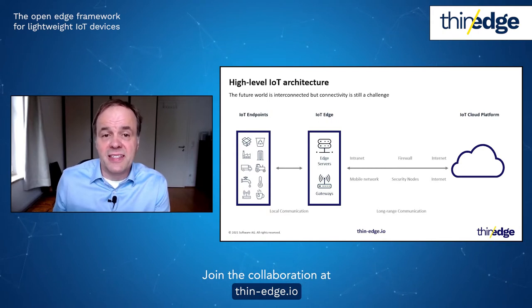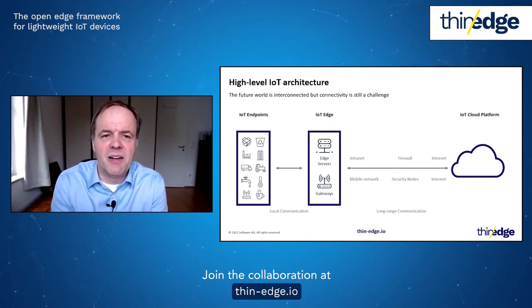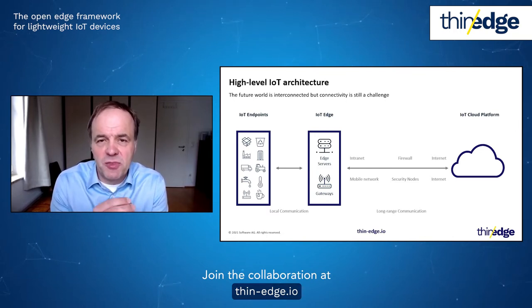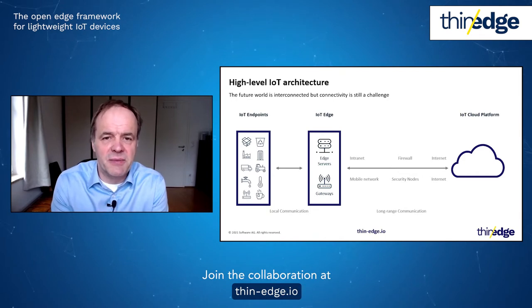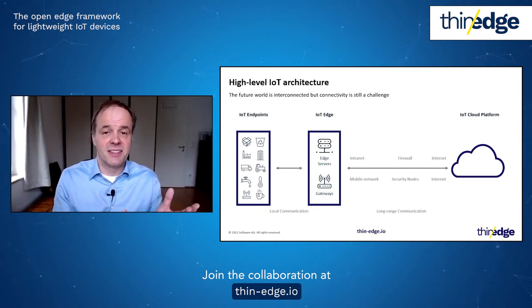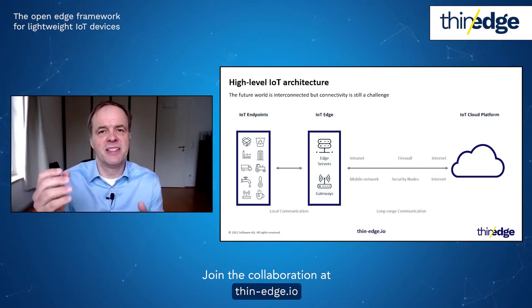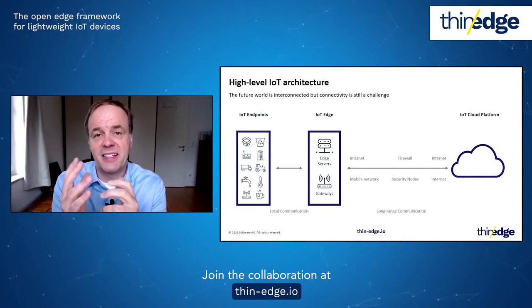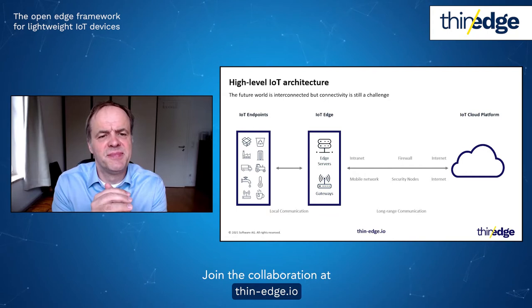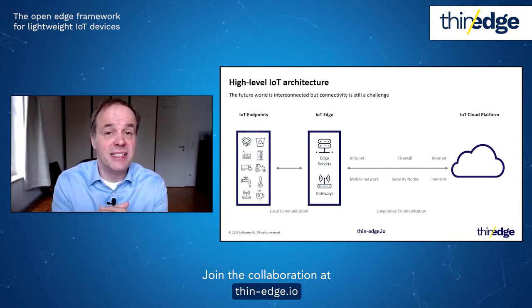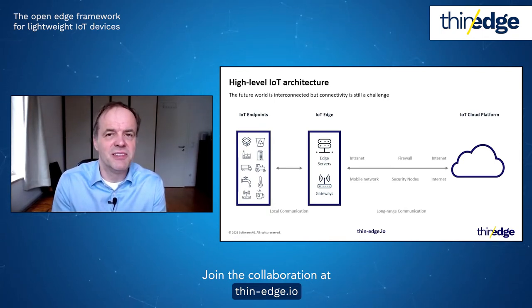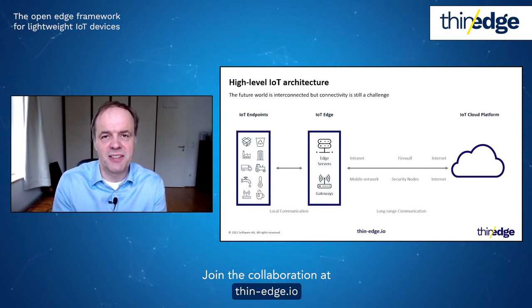Before going into details of thin-edge, let's first have a look at what challenges we need to solve in the new world of IoT. One of the main problems is connectivity — how can we connect all the devices to the cloud? This connectivity was never an easy problem because networks are unreliable, unsecure, and in some cases you even have to pay for the traffic you send over the network.